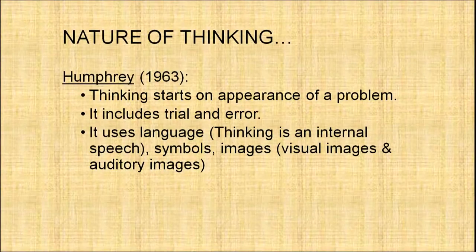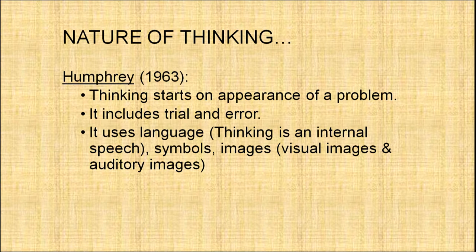Humphrey in 1963 gave some characteristics of thinking. Humphrey said that thinking starts on the appearance of a problem — when we encounter a problem, the process of thinking starts. Humphrey also said that thinking includes trial and error, though as we will understand, not every level of thinking necessarily involves trial and error. There are certain levels of thinking which do not include trial and error but instead include insightful learning.